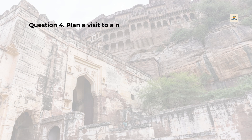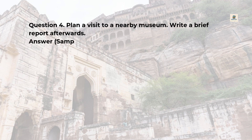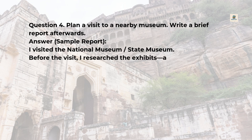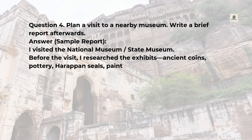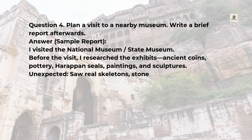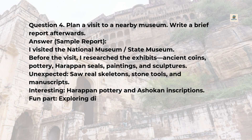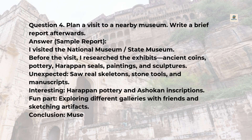Question 4: Plan a visit to a nearby museum and write a brief report afterwards. Answer — Sample report: I visited the National Museum or State Museum. Before the visit, I researched the exhibits including ancient coins, pottery, Harappan seals, paintings, and sculptures. Unexpected finds included real skeletons, stone tools, and manuscripts. Interesting highlights were Harappan pottery and Ashokan inscriptions. The fun part was exploring different galleries with friends and sketching artifacts. Conclusion: museums preserve our past and help us connect with history.